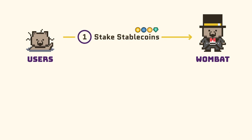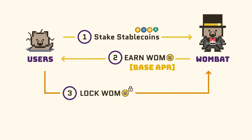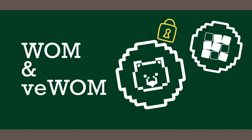Base APR refers to the annual percentage yield earned from staking liquidity without rewards boosting, which we will explain in a moment. Think of Base APR as the percentage value of WOM you will receive after staking liquidity for one year. Boosted APR refers to the annual percentage yield earned from staking liquidity with rewards boosting. Wombat has a built-in yield boosting mechanism where you can lock WOM tokens to increase your percentage yield.